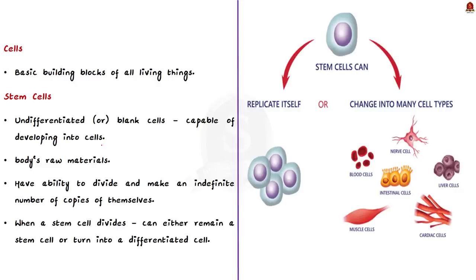Before that, you need to know about what is a cell. Cells are the basic building blocks of all living things. The human body is composed of trillions of cells. They provide structure for the body, take in nutrients and convert those nutrients into energy, carry out specialized functions, and also contain the body's hereditary material and can make copies of themselves.